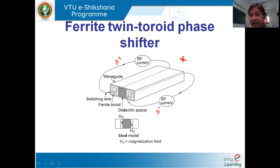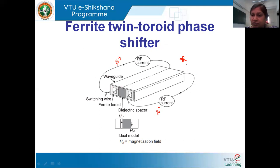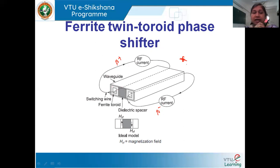As mentioned, the ferrite phase shifter can be reciprocal or non-reciprocal. Changing the current direction changes the values of β+ and β−, which may or may not give the same phase shift φ — that is why it can be either reciprocal or non-reciprocal. That covers the microwave phase shifters. In the next class, we will discuss other microwave passive devices — the T-junction: what it is, how it works, and what it is used for. Thank you, see you soon in the next class.